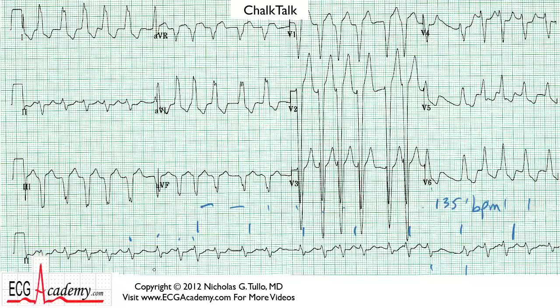So thirteen and a half — that gives us a rate of 135 beats per minute. That was pretty easy, and it's much more accurate than just trying to guesstimate the average rate.